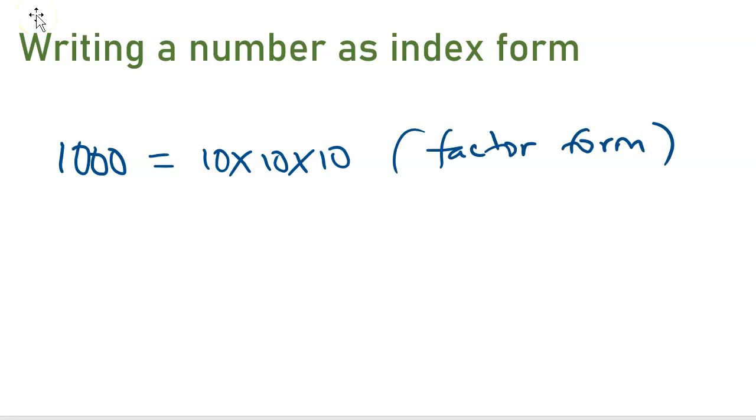However, you can write these 10 times 10 times 10 as 10 to the power of 3. So when you have it as 10 to the power of 3, we call it index form.